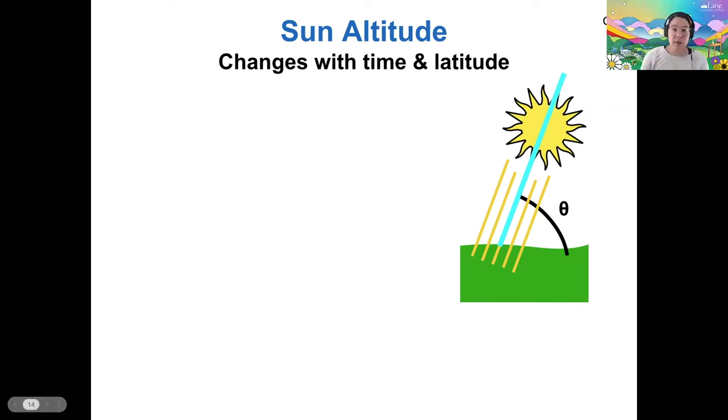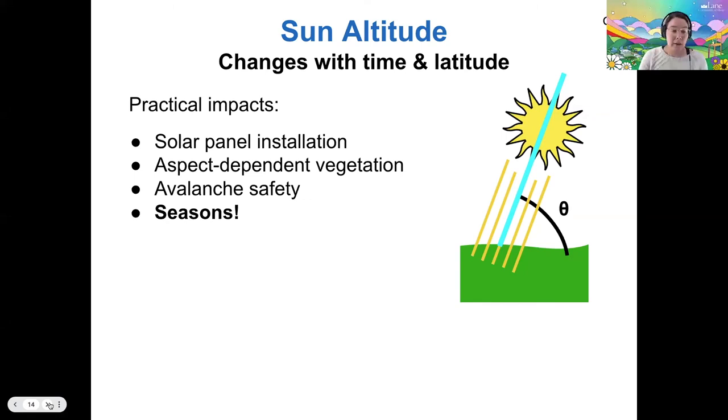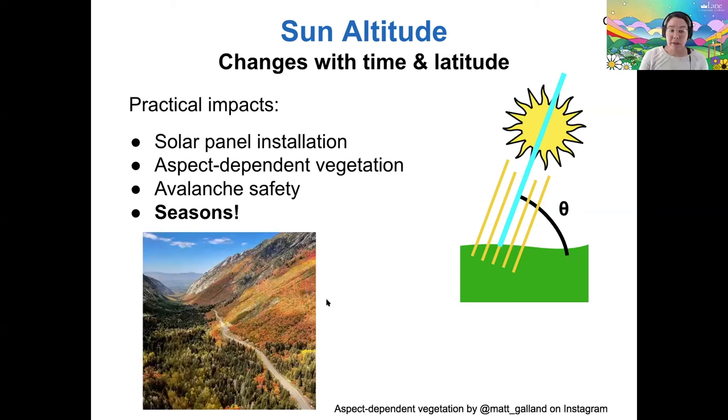So all of these effects together have some important consequences. There's practical impacts for solar panel installation, for passive solar building design. Vegetation is impacted by sun altitude effects. Avalanche safety is impacted by aspect, so what faces north or south during specific times of the year when there's snow. And of course, this sun altitude drives the seasons. So we're going to focus on the seasons and this idea with solar panels today, but there's lots of other reasons why we care about the altitude of the sun.